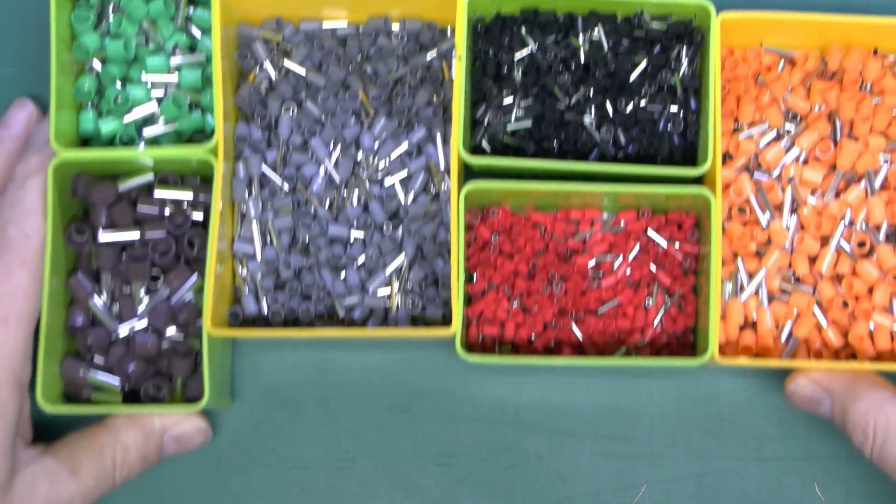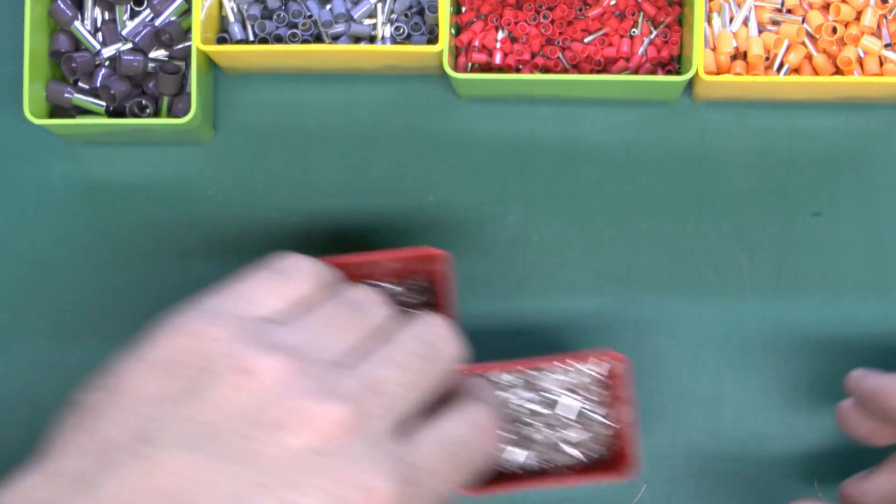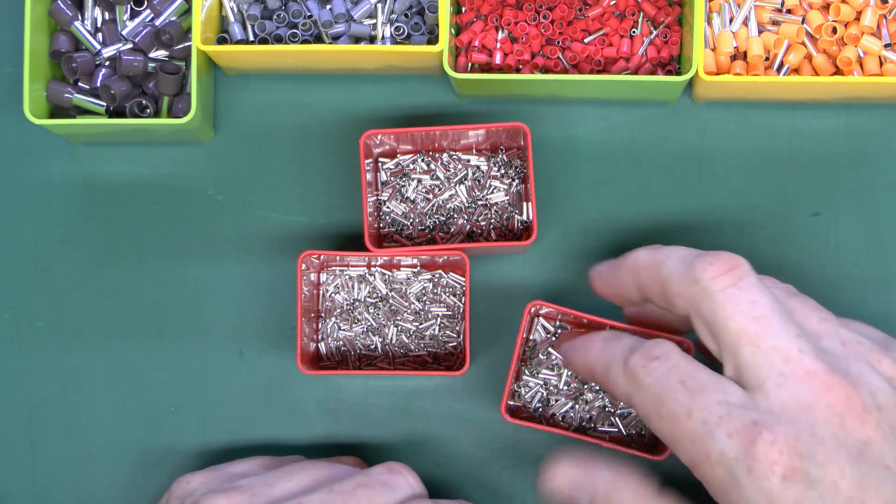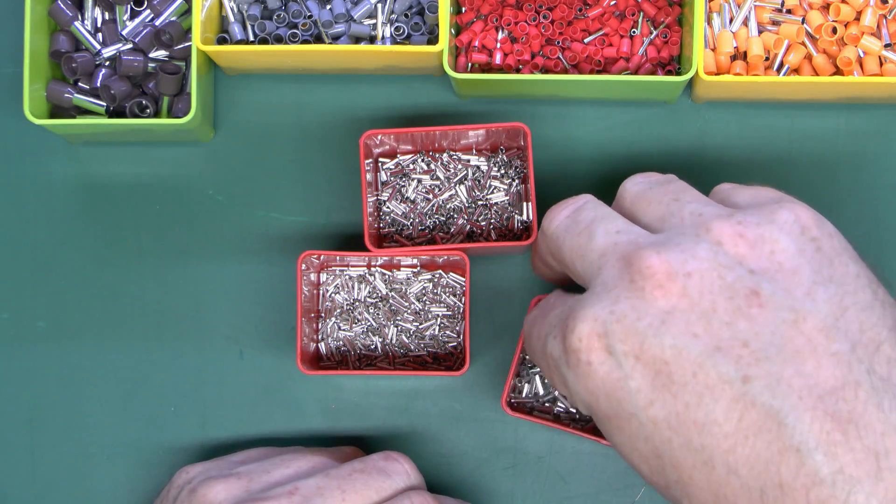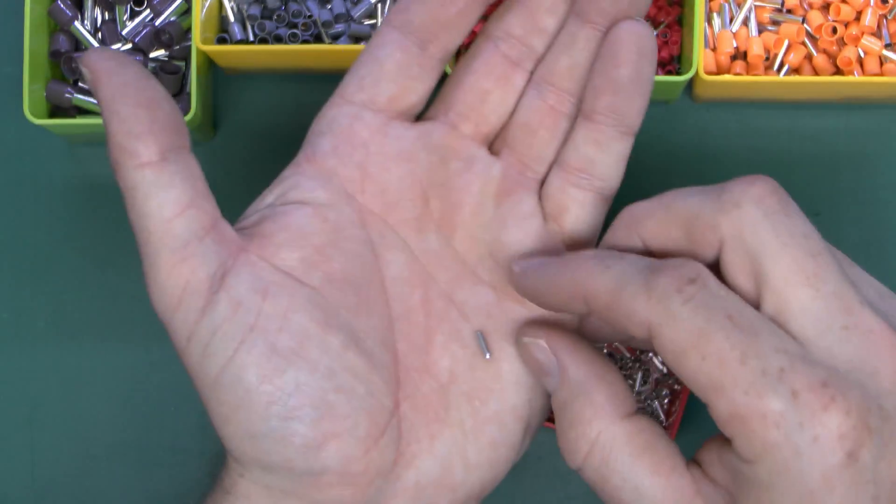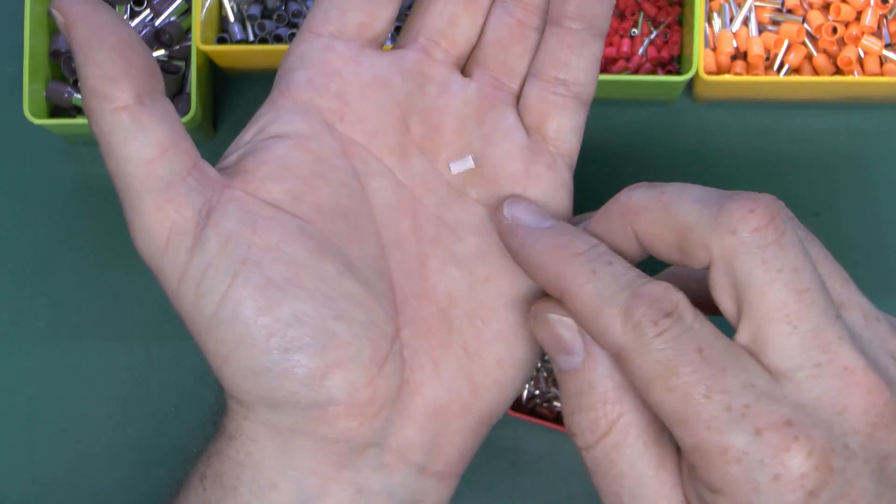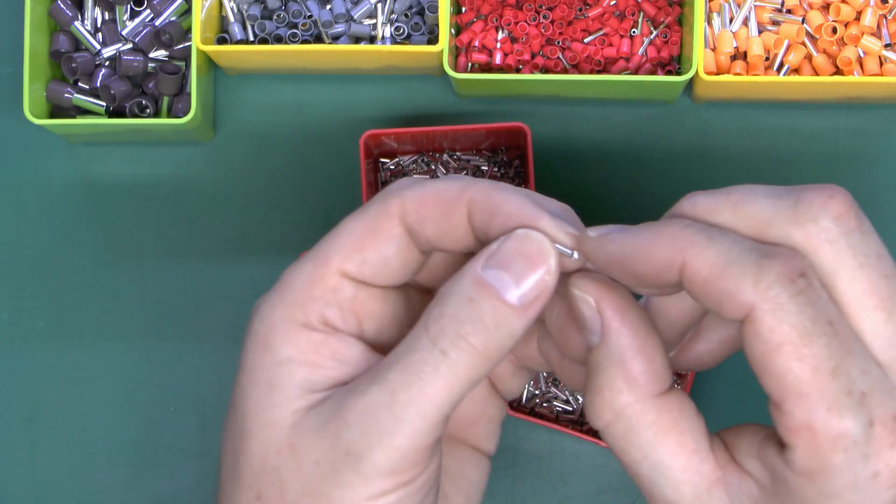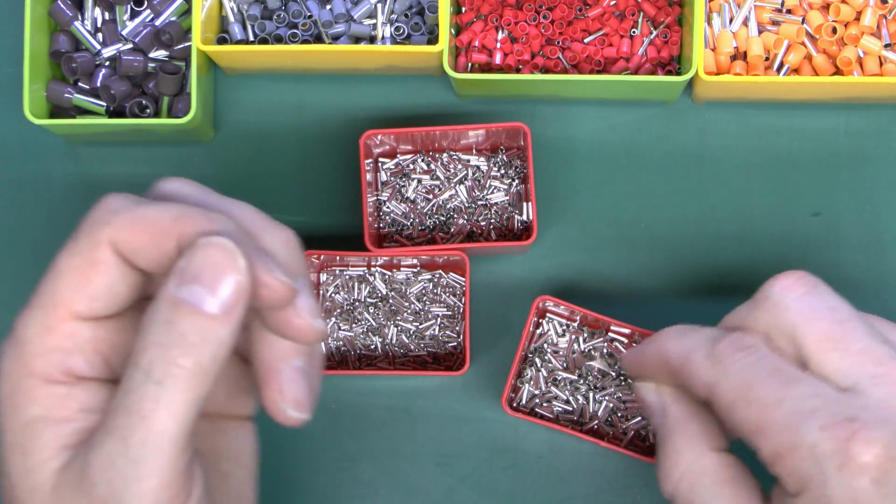And as well as these with the insulated parts, you can also get things like these, which are basically the same, except they don't have that insulating part. It's simply the metal tube on its own. And these are some fairly small ones. But nevertheless, it's pretty much the same, just a hollow metal tube that the wire is placed into.